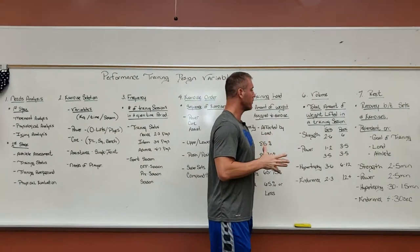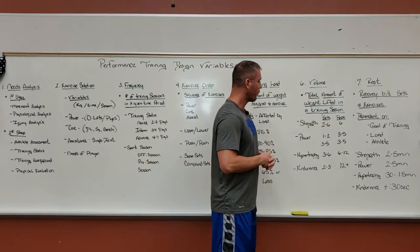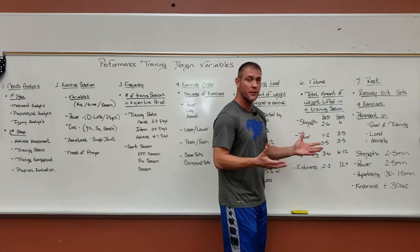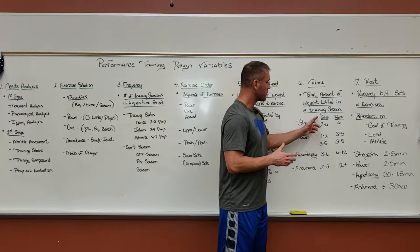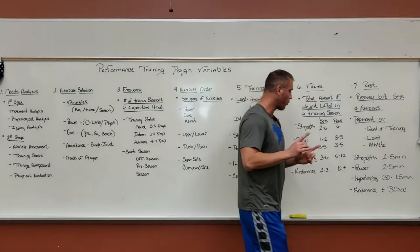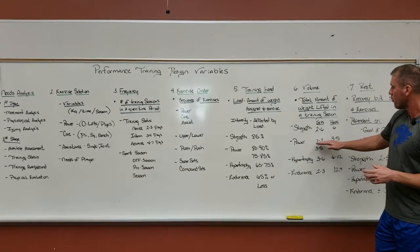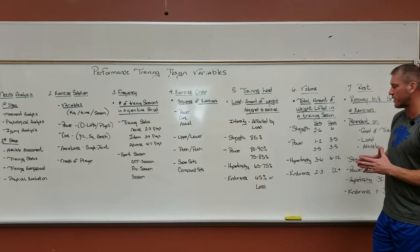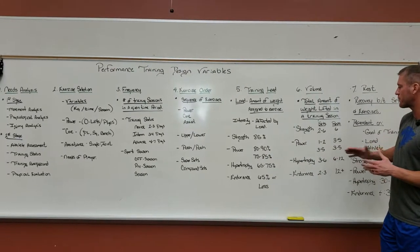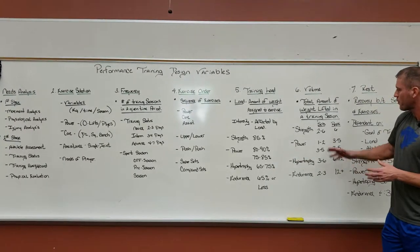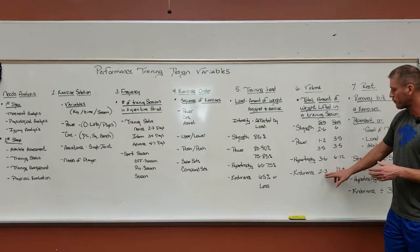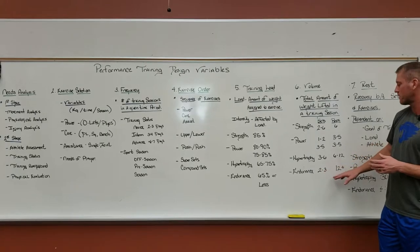Next is our volume — the total amount of weight lifted in that training session. For strength, you would work between two and six sets for about six reps. For power at 80% to 90%, one to two sets of three to five reps. For Olympic lifting power at 75% to 85%, three to five sets of three to five reps. For hypertrophy at 65% to 75%, three to six sets of six to 12 reps. For endurance, two to three sets of 12 or more reps.